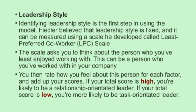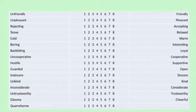Identifying leadership style is the first step in using the model. Fiedler believed that leadership style is fixed and can be measured using a scale called the Least Preferred Co-worker scale, or LPC. The scale asks you to think about the person you have least enjoyed working with — from any company or institution — and rate them on a scale from one to eight.